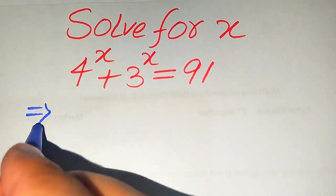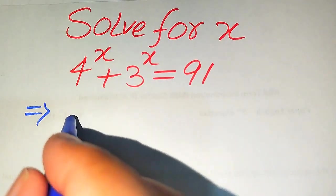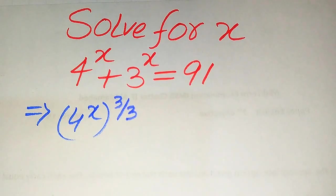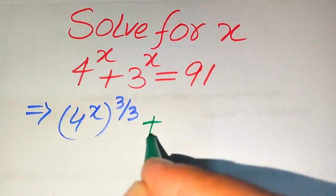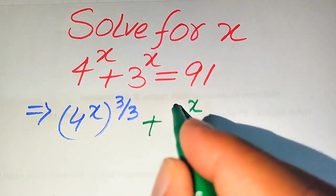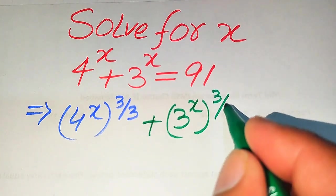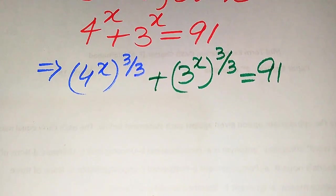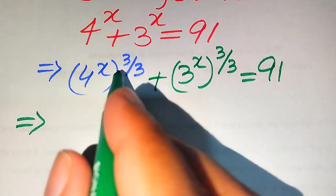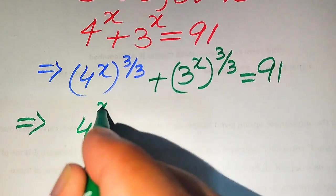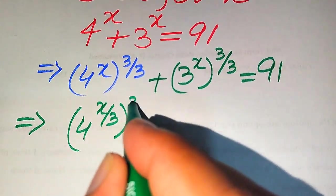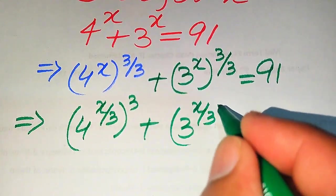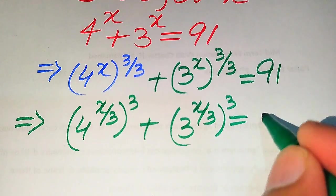So here first we multiply and divide the exponent of these two terms by 3. It will be written as 4 to the power of x, with its exponent 3 divided by 3, plus similarly 3 to the power of x with its whole power 3 over 3, equals 91. Here we use the exponential law and move 1 over 3 inside the term, so it becomes (4^(x/3))³ plus (3^(x/3))³ equals 91.